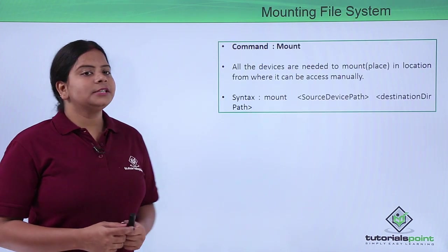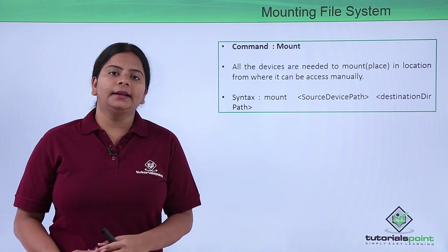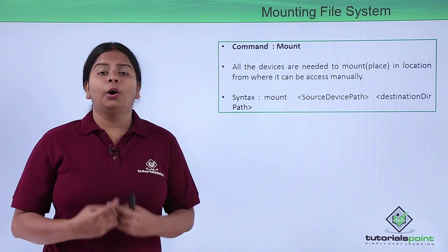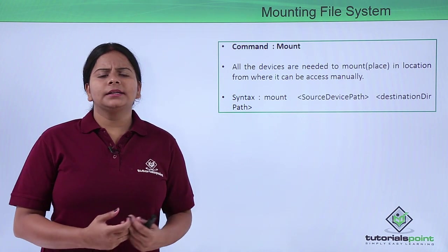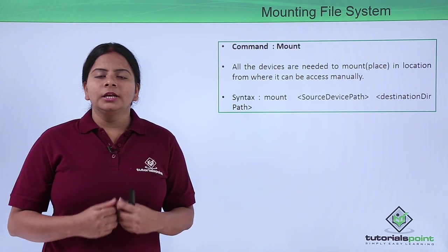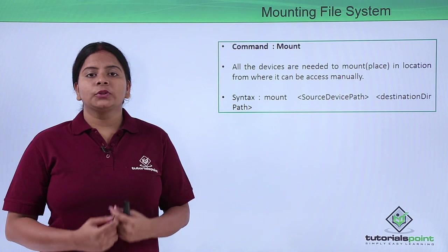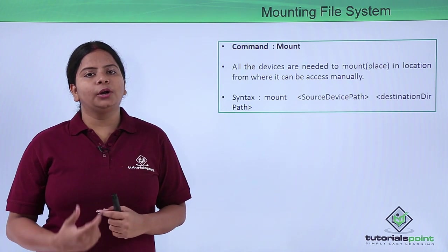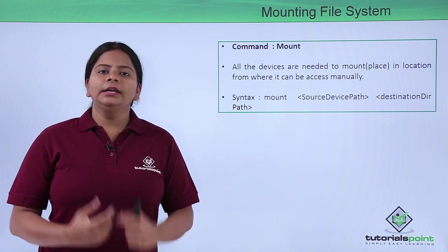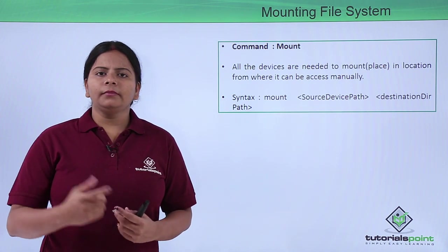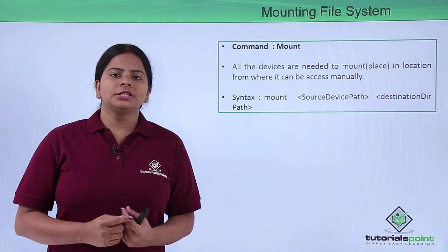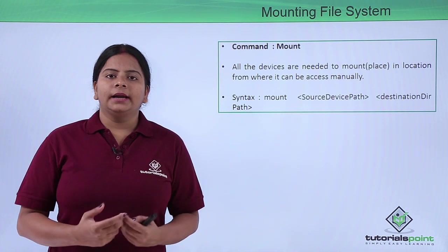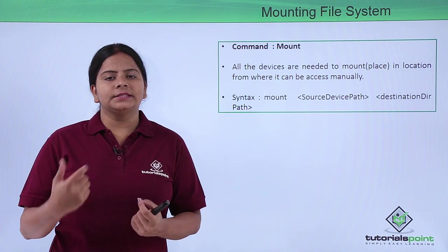Next we have mounting. If you have already created a partition and want to use it, or if you've connected a DVD and it doesn't get mounted into your media automatically, you have to mount it manually. The 'mount' command locates our devices into a particular directory so we can use them. In Windows, partitions like C drive, D drive, and E drive are created and shown in My Computer.